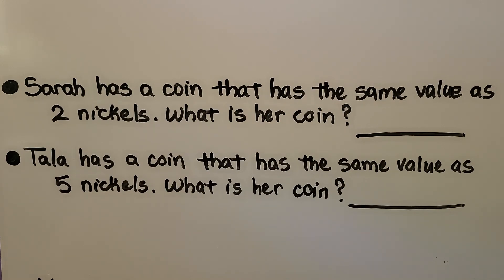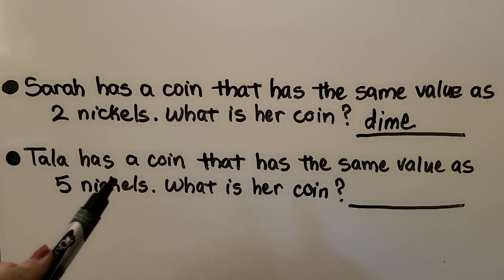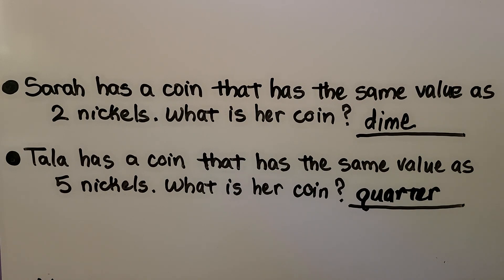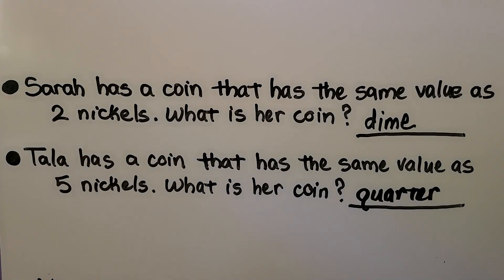Sarah has a coin that has the same value as two nickels — what is her coin? If you said dime, you're right. Two nickels would be 10 cents and a dime is 10 cents. Tala has a coin that has the same value as five nickels — what is her coin? If you said quarter, you're right. A nickel is five cents, so skip counting: five, 10, 15, 20, 25. That would be 25 cents — a quarter.